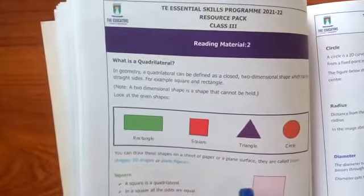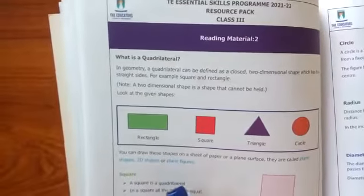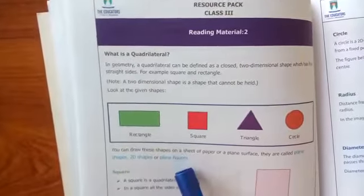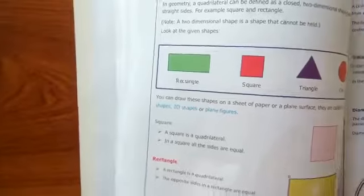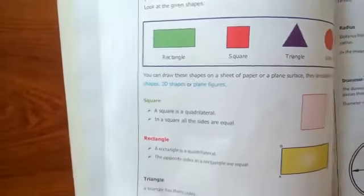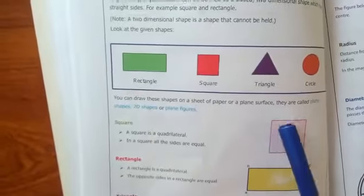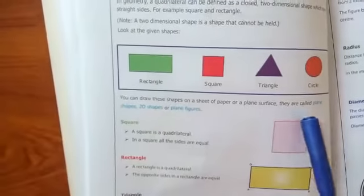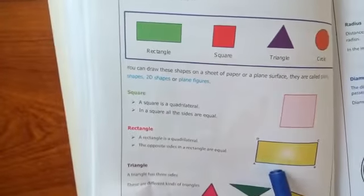a sheet or a plane surface are called plane shapes. 2D shapes are plane figures. So here are some plane 2D shapes. Square - a square is a quadrilateral having four sides with all four sides equal. Here is a rectangle, and